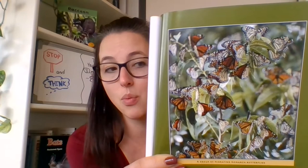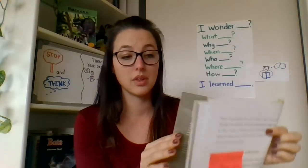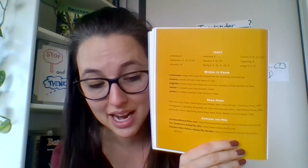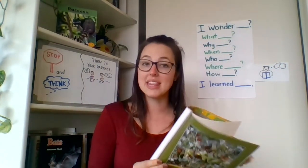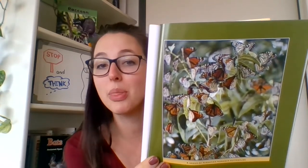Most butterflies do not like cold weather. During the winter, some butterflies migrate to stay warm. That word is in bold, which means it's important. Nonfiction books often have bold words, and they are usually explained in the 'Words to Know' or the glossary. This one tells us that migrate means to move from one place to another, usually to find warmth. Monarch butterflies fly to trees far away from their home and find the same trees every year. Monarch butterflies are the large orange and black ones — we have them here in this state in our parks.